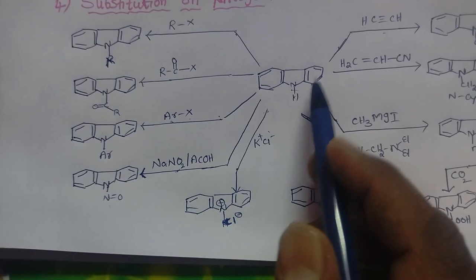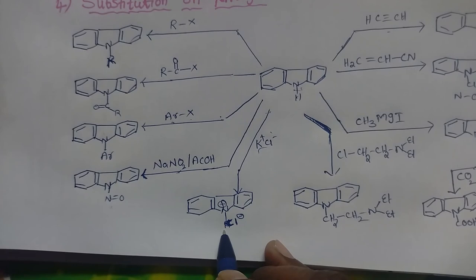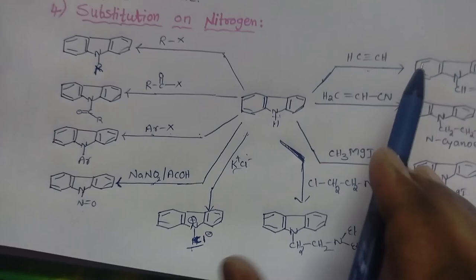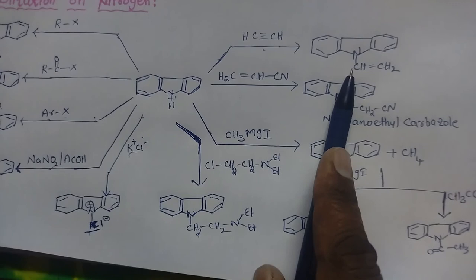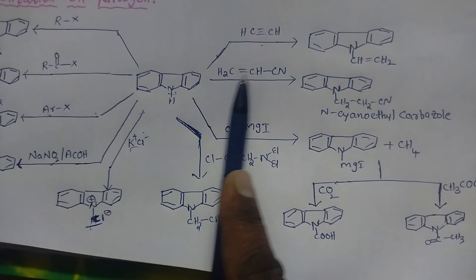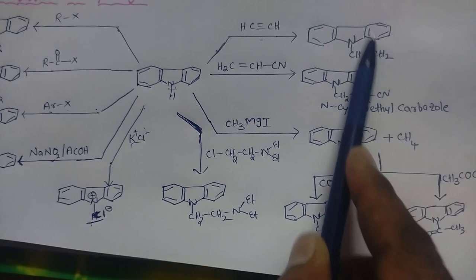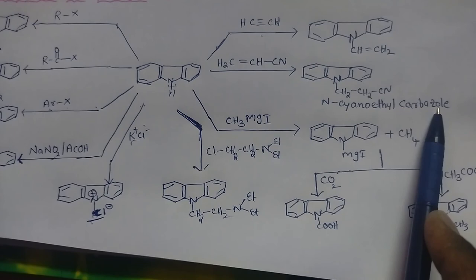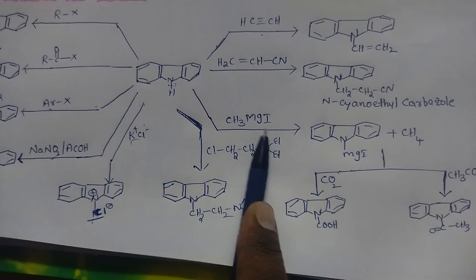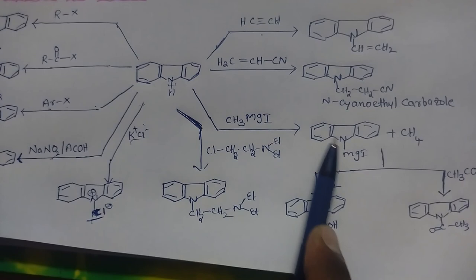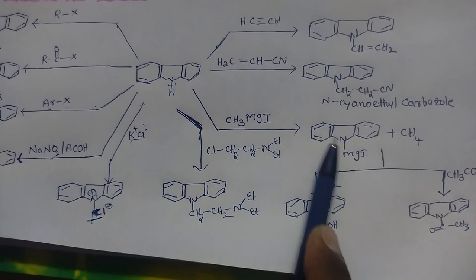When carbazole is treated with potassium chloride, we get a solid carbazole chloride. When treated with acetylene, we get N-vinyl carbazole. When treated with vinyl cyanide, we get N-cyanoethyl carbazole. When carbazole is treated with methyl magnesium iodide (a Grignard reagent), we get N-iodo magnesium carbazole. On treatment with carbon dioxide, this gives carbazole N-carboxylic acid.